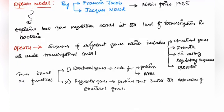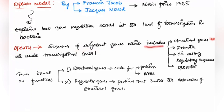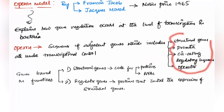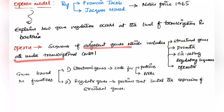An operon is a sequence of adjacent genes that includes structural genes, promoter, regulatory sequences that produce regulatory proteins, and the operator region — all under transcriptional control. It is a sequence of DNA containing the structural genes, promoter, regulatory sequences, and operator regions.